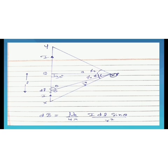However, we need to express everything in terms of one variable. The formula has three variables: dL (current element length), sin θ (angle, which changes), and R (position vector, which changes with θ). So we will express dL, sin θ, and R all in terms of a single variable φ, then integrate.